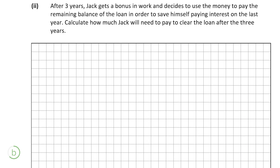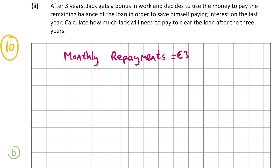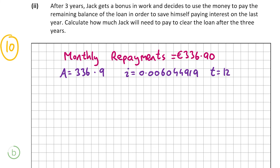Now we look at B, Part 2, worth 10 marks. After three years Jack gets a bonus and decides to repay the remaining loan balance to save on interest for the last year. We need to find how much Jack will need to pay to clear the loan after three years. Jack pays €336.90 every month, so we find the present value of 12 remaining monthly payments of €336.90 at the same interest rate of 0.006044919.